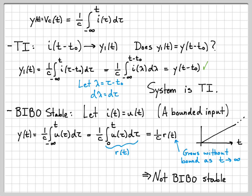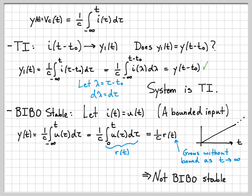To show something is BIBO stable would require proving it holds for all bounded inputs, which takes a more general argument. That concludes our problem. We had a simple circuit, found an equation relating input and output, and using that equation determined all the properties the system had or didn't have.